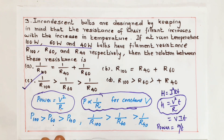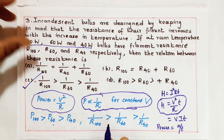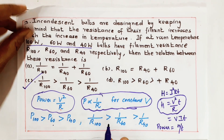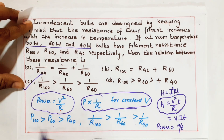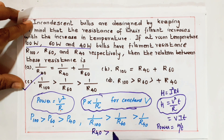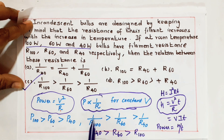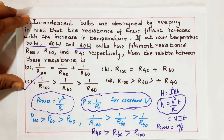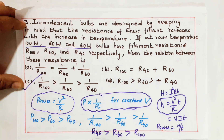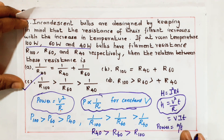P100 > P60 > P40, therefore 1/R100 > 1/R60 > 1/R40. If there is no reciprocal, R40 > R60 > R100. So 1/R100 being greater means R100 is less. For a 100 Watt bulb, resistance is less; for a 40 Watt bulb, resistance is more. Power and resistance are inversely proportional.